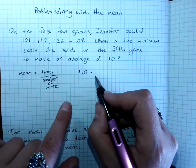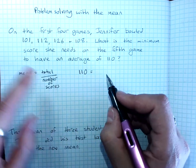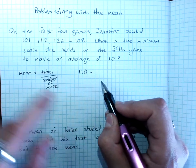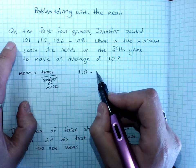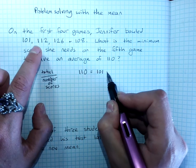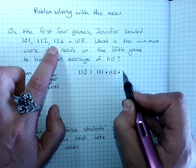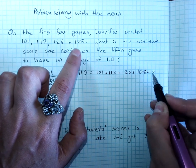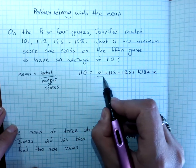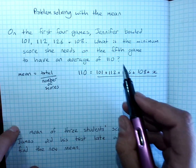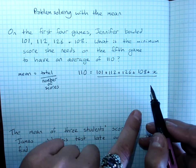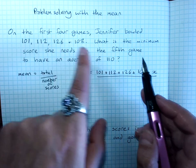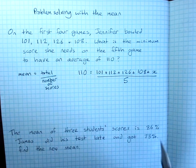110, now that has to be the total divided by the number of scores. The total will be 101 plus 112 plus 126 plus 108 plus X, the fifth game score that we don't know. And the number of scores when we've done the fifth game as well will be 5.